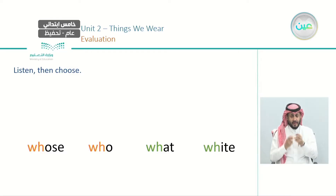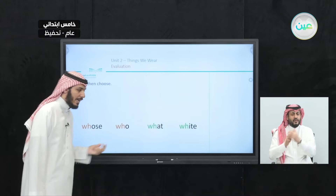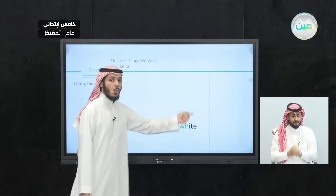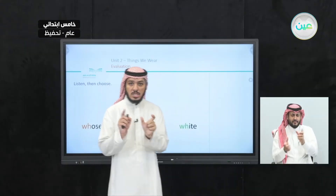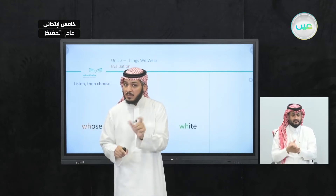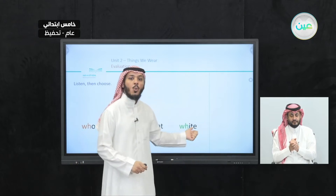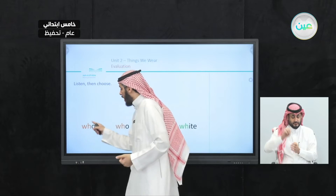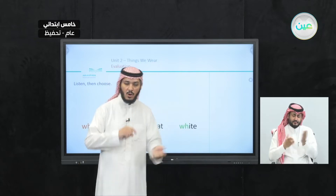Now let's listen to another word: 'White.' Can you tell me which one is white? Excellent — this is white. Here, we pronounce the letter W but not H — H is silent. So sometimes with WH, we pronounce W and sometimes we pronounce H. Like here: 'whose' — W is silent. But here: 'white' — H is silent.